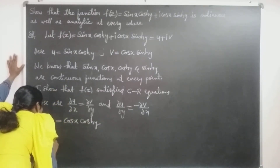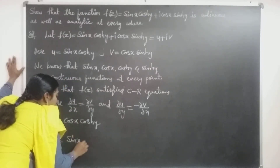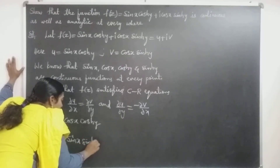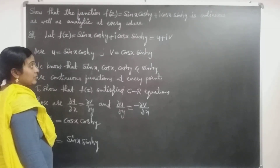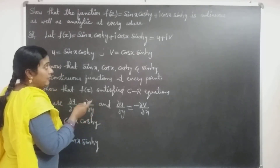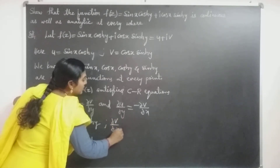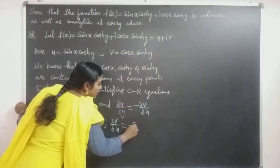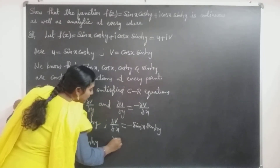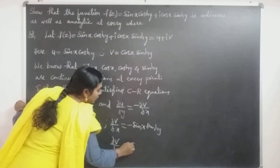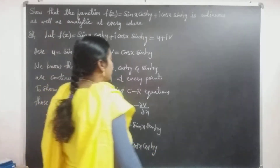Again, differentiating u with respect to y, treating sin(x) as constant: the derivative of cosh(y) is sinh(y), so ∂u/∂y = sin(x)sinh(y). For hyperbolic functions, both sin and cos derivatives are positive — sinh becomes cosh and cosh becomes sinh. In the same way, ∂v/∂x = −sin(x)sinh(y) and ∂v/∂y = cos(x)cosh(y).